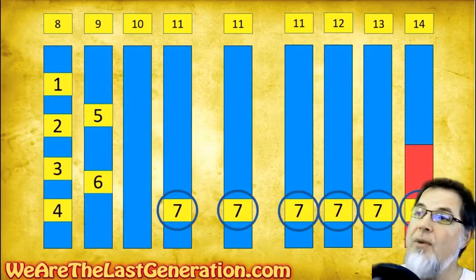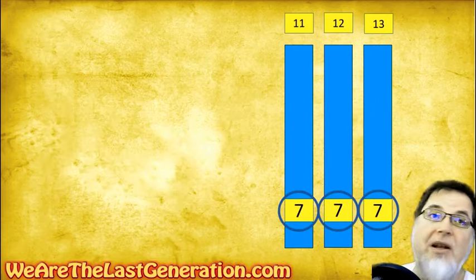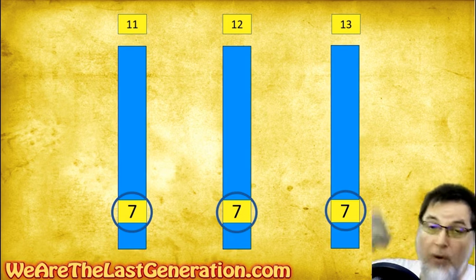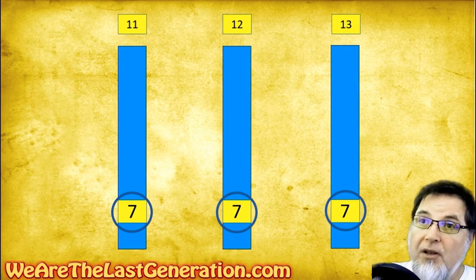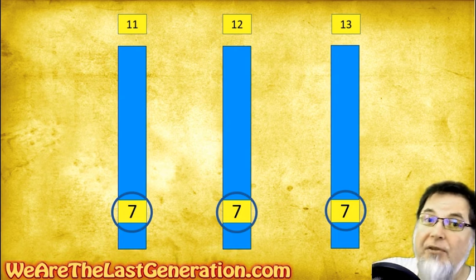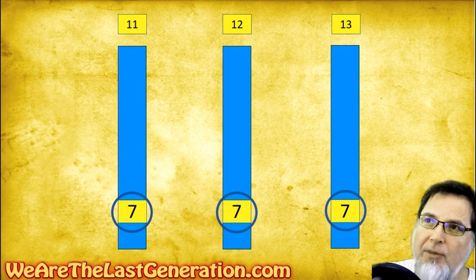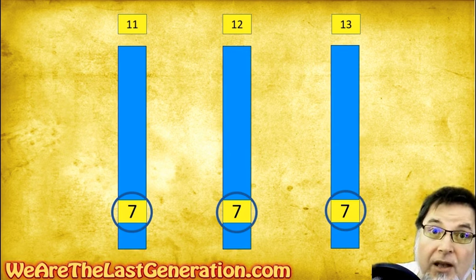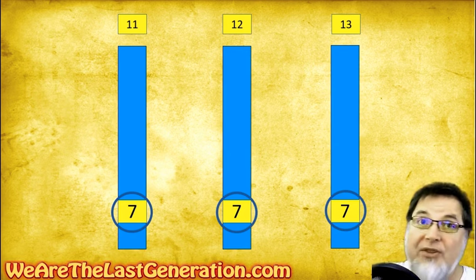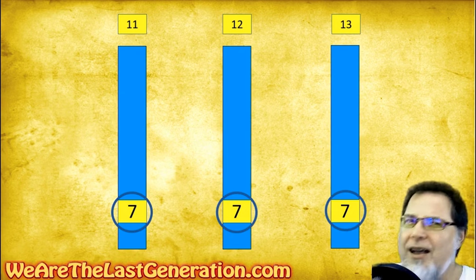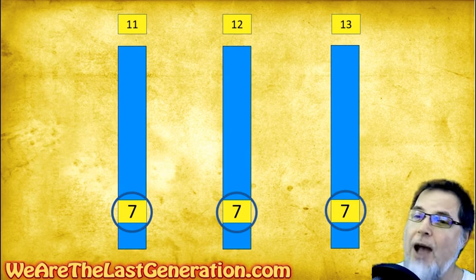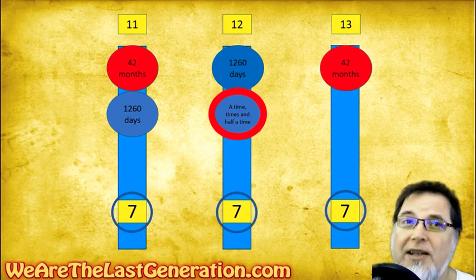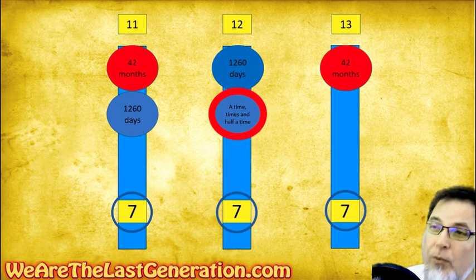Here we are with the chapters of tribulation — these are the chapters that actually talk about the three and a half year period. We're focused on chapters one, two, and three out of 22 chapters in Revelation, out of 14 chapters in the middle seals division. We're looking at three of the most complicated chapters, because the three and a half year period is called different names: a 42-month period, a 1260-day period, and a time, times, and half a time.